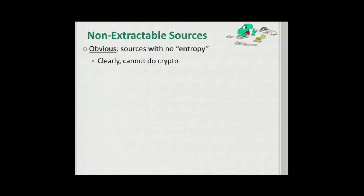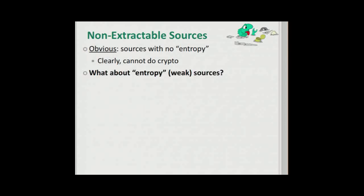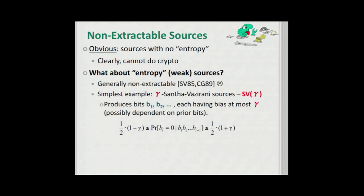So let's look at non-extractable sources. It's obvious that if the source has no entropy, then we can't do crypto. But what about sources that have some entropy — they're just not perfect? Generally, they're not extractable. So that's bad news.